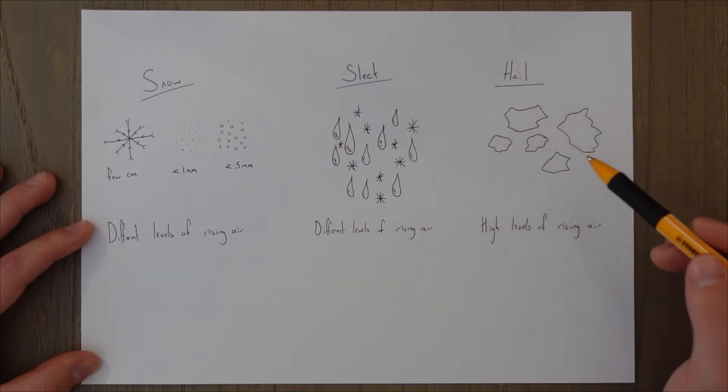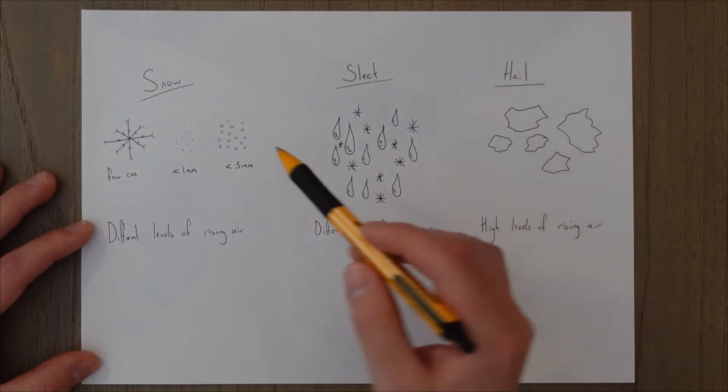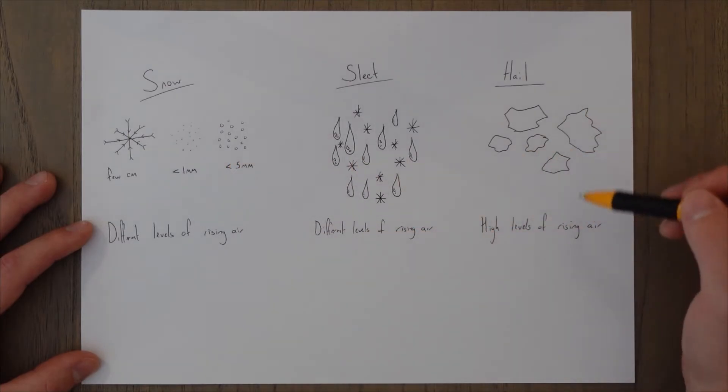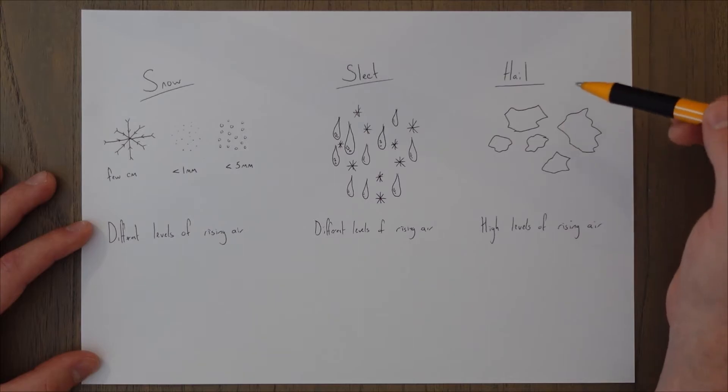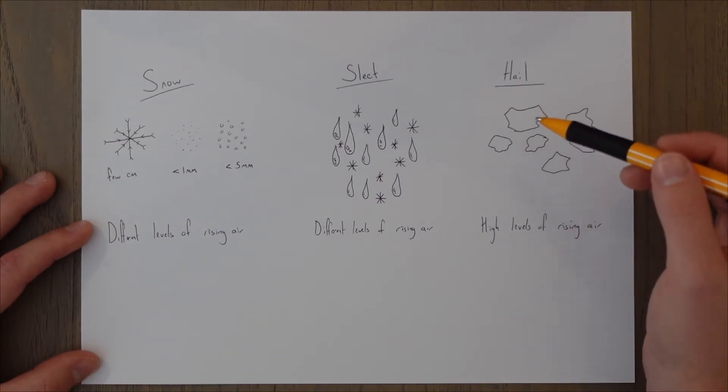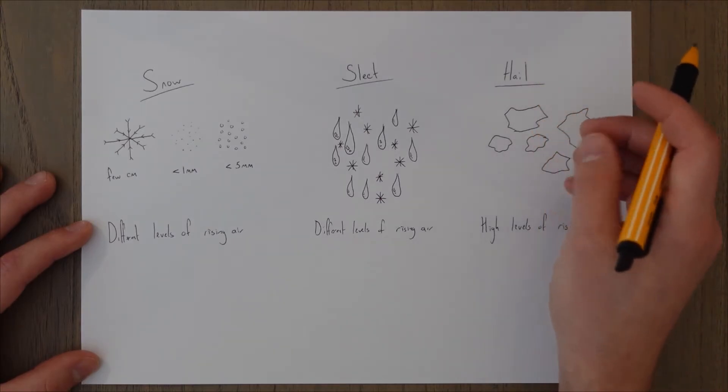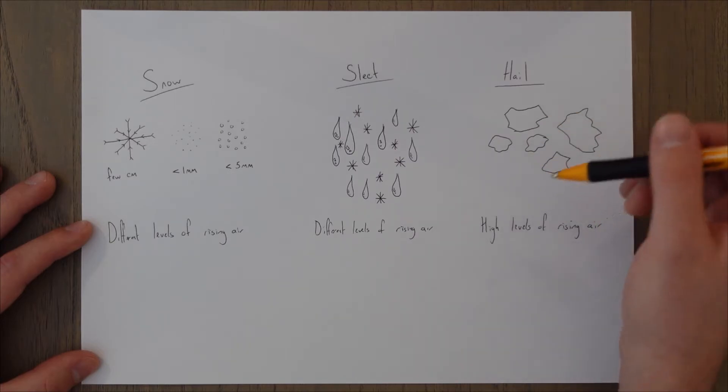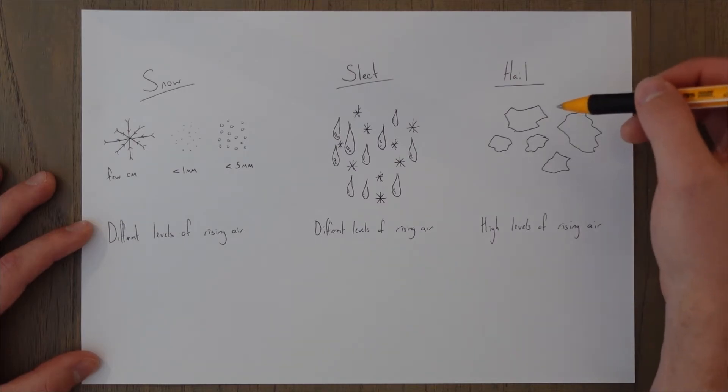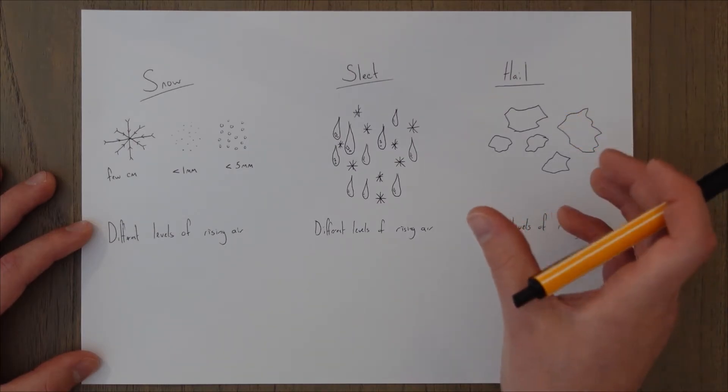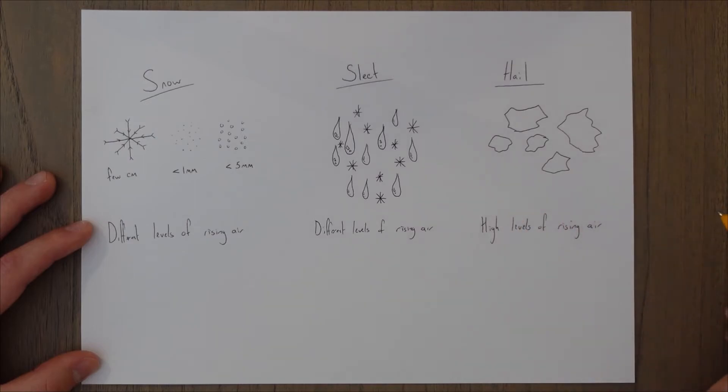You also have hail which forms when an ice pellet rises and falls within a cloud that has a lot of rising air such as a big cumulonimbus cloud. As the ice grows it falls and collides with more supercooled water droplets or ice particles on the way down through the cloud then the rising air sends it back up to the top and it falls down again and it gathers these layers and layers of ice.